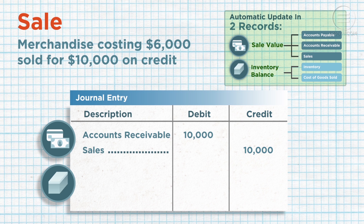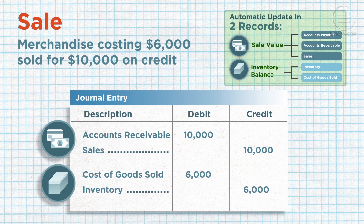Because the perpetual inventory system is being used, you'll also see an entry for the cost of goods sold. Cost of goods sold is debited and inventory is credited.